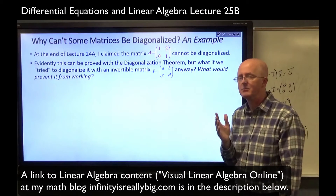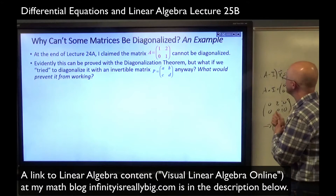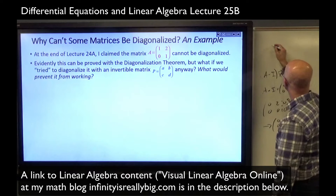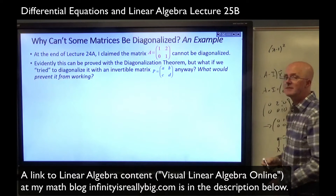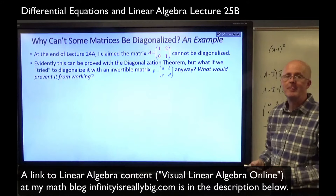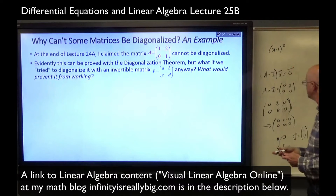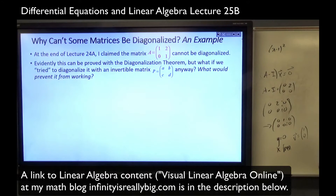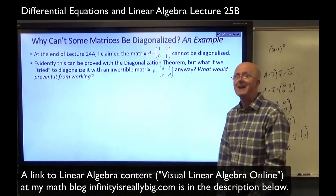The characteristic polynomial here can be factored as (lambda minus 1) squared — multiplicity 2. But we do not have two linearly independent eigenvectors, so therefore by the diagonalization theorem it's not diagonalizable.